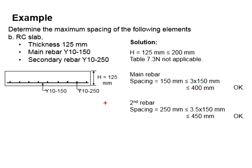For the secondary reinforcement bar, which controls crack spacing, check against 3.5 times the slab height and 450 mm. The spacing of 250 mm is less than 3.5(125) = 437.5 mm and less than 450 mm, so it is acceptable.